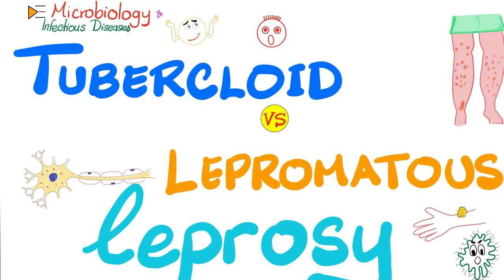For a very similar reason. If you have tuberculoid leprosy, it's probably because your cellular immunity — i.e. the T lymphocyte immunity — is very strong, capable of making a granuloma. But if you have lepromatous leprosy, your cell immunity is weak. That's why you could not make a granuloma.